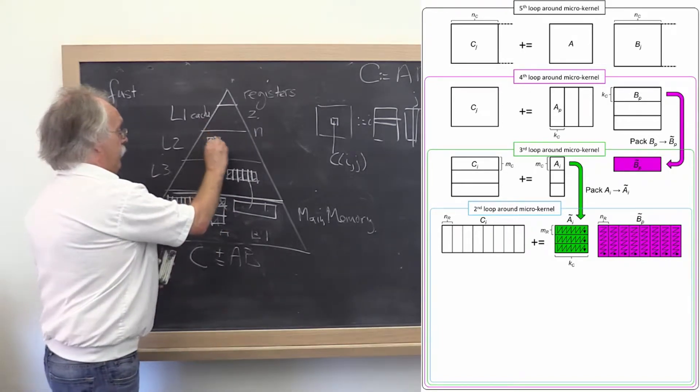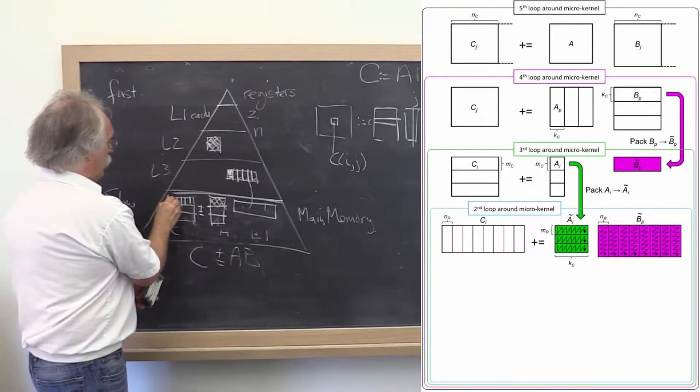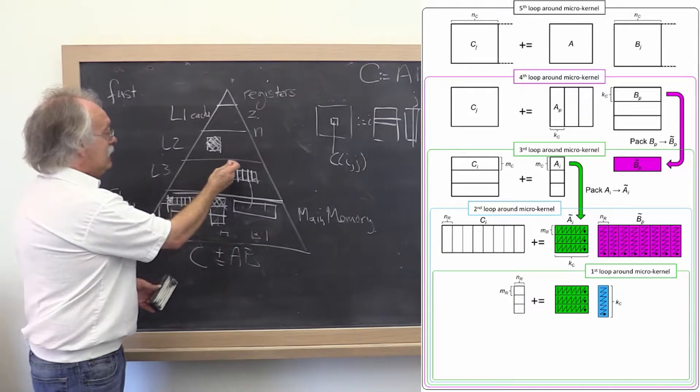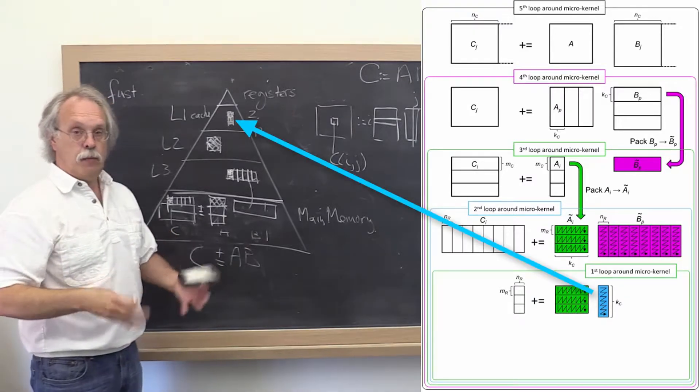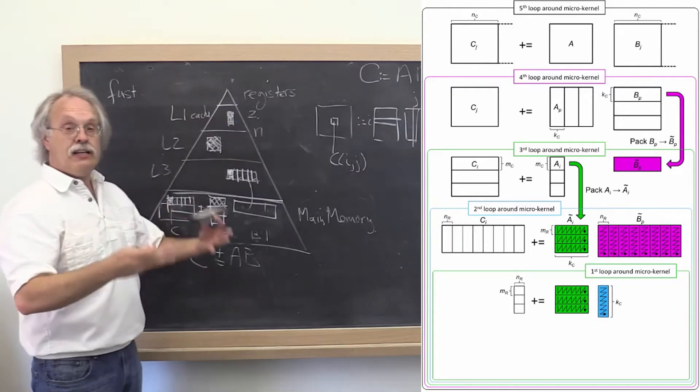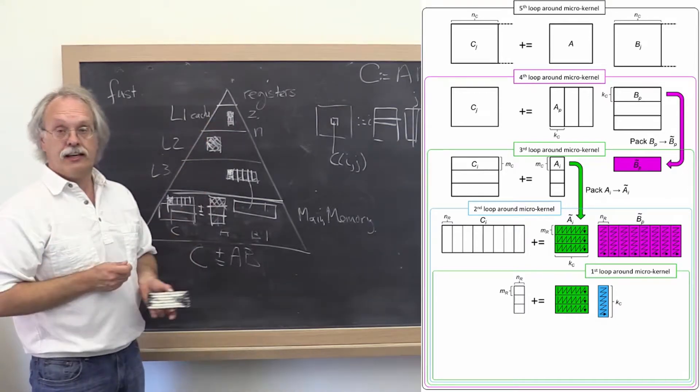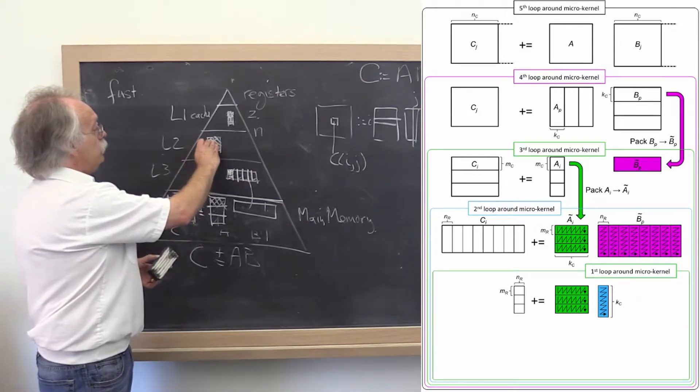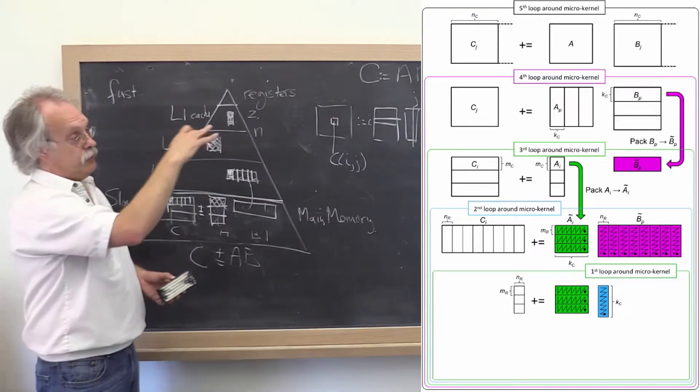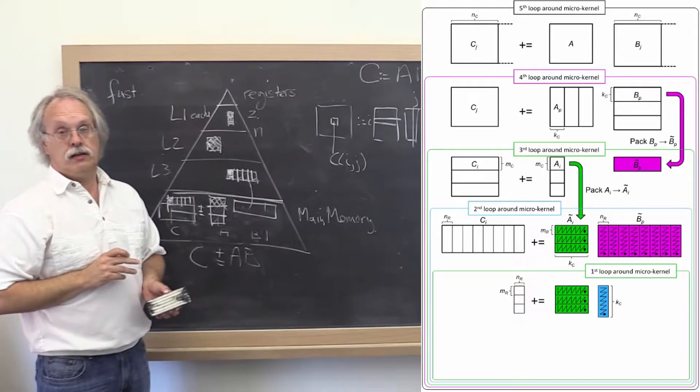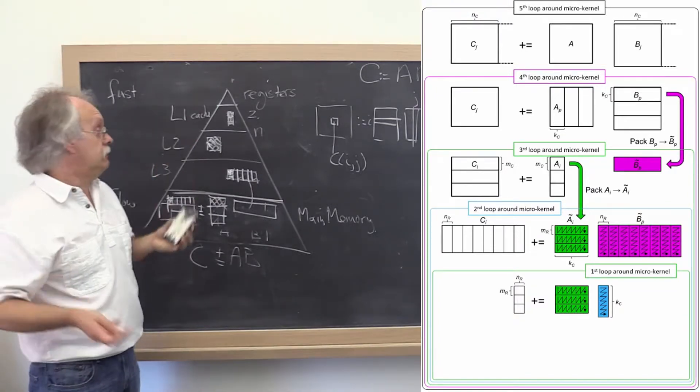And now you can take this times a typical block over here to update a typical block over there. And this typical block here then ends up being brought into the L1 cache. Again, the computation is organized in such a way that the mechanism for replenishing what is in the L1 cache encourages this data to stay in the L1 cache. So now we're left with having to do this times that to update a little sliver of C right here. Hopefully you're following along with how the loops develop over there on the right.